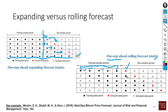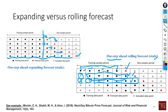Every time a new data point becomes available, we roll our training sample forward. We drop the first data point and instead use the next five training points to forecast the next period. Again, when another new data point becomes available, we use those five data points to forecast the following period. So we keep rolling our training sample forward, leaving previous data points behind — that is the rolling forecasting approach.